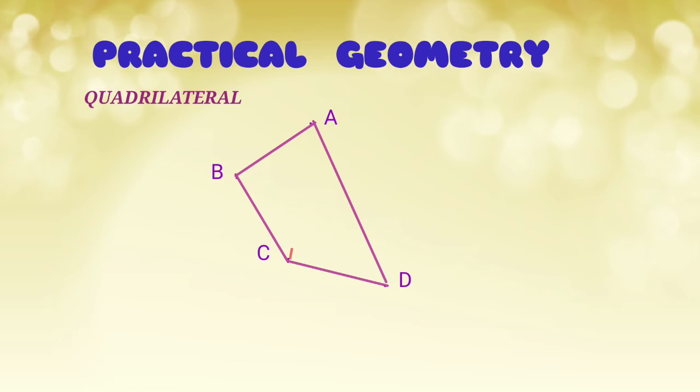If we join the opposite vertices of a quadrilateral, then we get the diagonals. This quadrilateral ABCD has two diagonals, AC and BD.